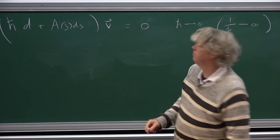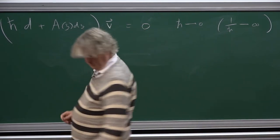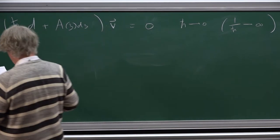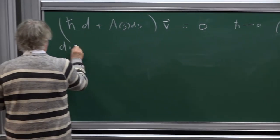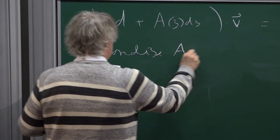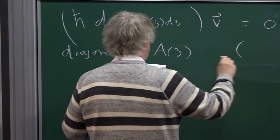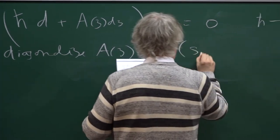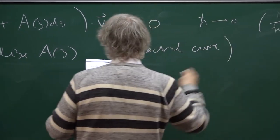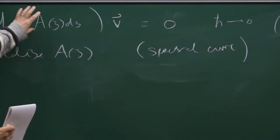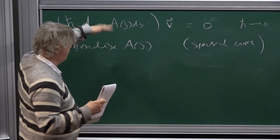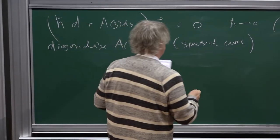Let's diagonalize the matrix. This is really going to be the spectral curve. If we try to diagonalize the matrix, we want to know what are the eigenvalues. The eigenvalues of the matrix are multivalued functions, and that forms the spectral covering of z.